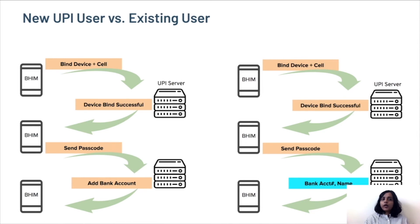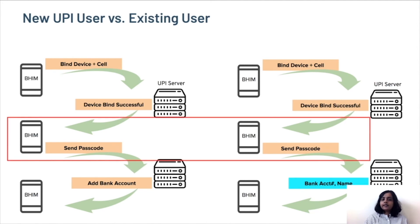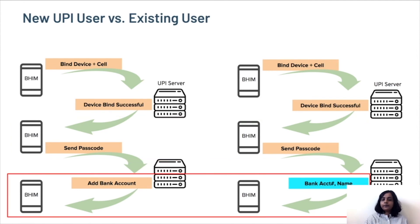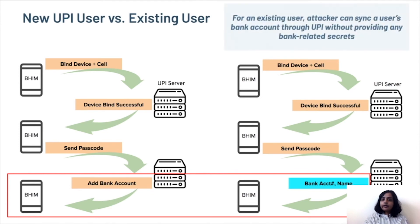There is a slight nuance between the workflow of a user setting up UPI for the first time versus an existing user. Once a user enters a passcode, in the case of a new user, the UPI server asks the user to add a bank account. However, in the case of an existing user, the UPI server simply syncs an existing UPI account onto the user's phone. From an attacker's standpoint, this is useful because for compromising an existing user, the attacker has to do less work, and it is possible for an attacker to sync an existing user's bank account onto the attacker's phone.